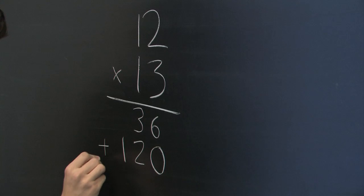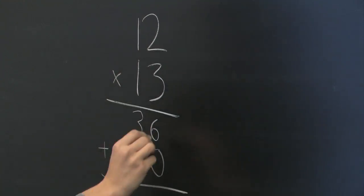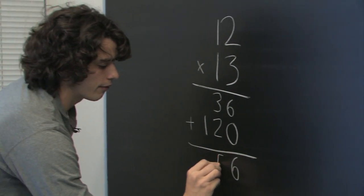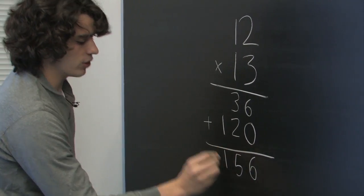Now, we're going to add these numbers up. We're almost done. 6 plus 0 is 6. 3 plus 2 is 5. And we just have a 1 there.